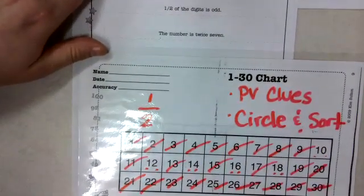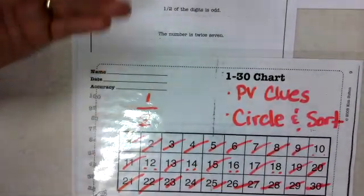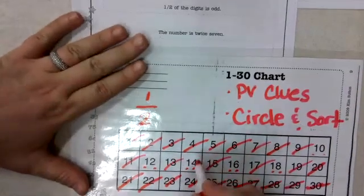The number is twice seven, so that means two times seven, or seven plus seven. Then that means it is fourteen. If I did it correctly, yep, it was fourteen.